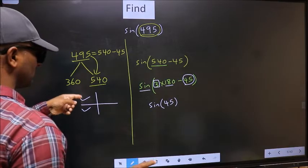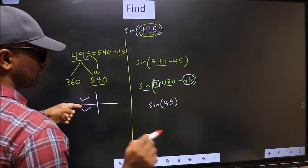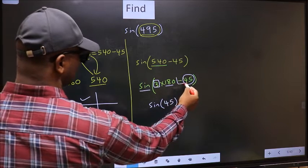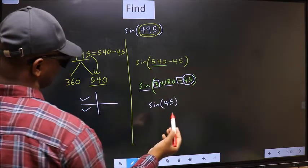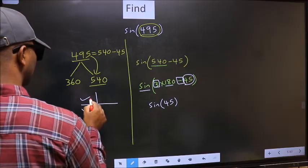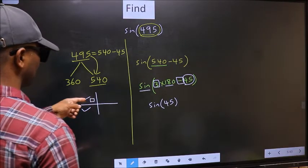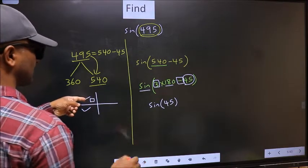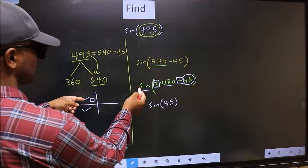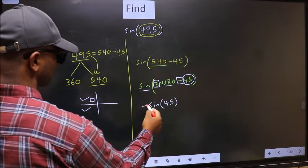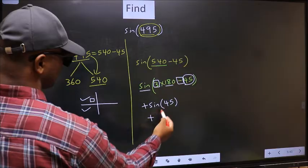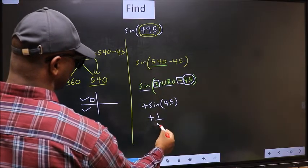So now to select the quadrant, we should look at this symbol. Here we have negative. That means the angle lies in the second quadrant. And in the second quadrant, sin is positive. So we should put plus. So plus sin(45) is 1 by root 2. This is our answer.